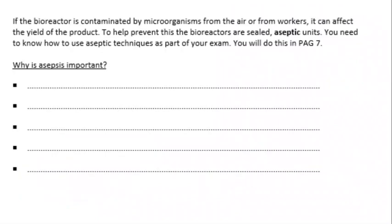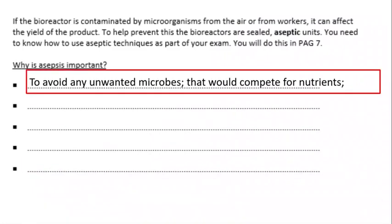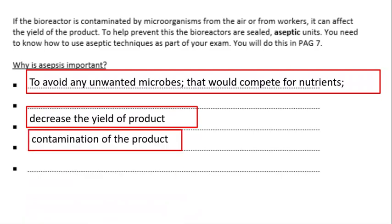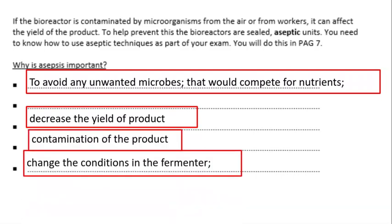When using a fermenter like this, it's important to have aseptic conditions and for it to be sterile inside. The reasons for this are: I want to avoid any unwanted microbes growing in there that could compete for nutrients. If they were present, they would decrease the yield of the product I'm interested in, contaminate the product, and could change the conditions inside the fermenter.